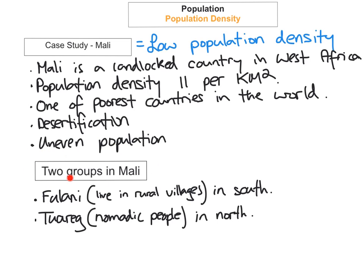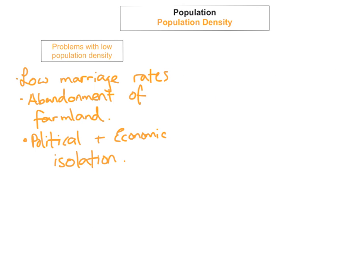Mali has two main population groups: the Fulani, who live in rural villages in the south, and the Tuareg, nomadic people who live in the north. There is a huge divide between these groups. Like other places with low population density, Mali experiences low marriage rates — typically because males leave to search for work in urban areas, creating a surplus of females in rural areas and males in cities.